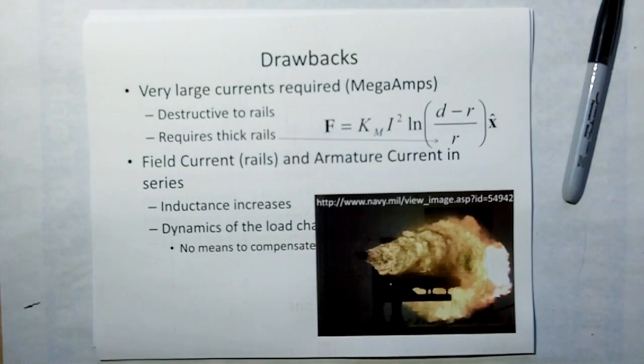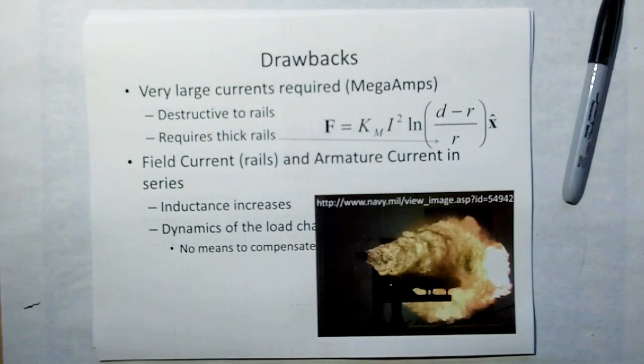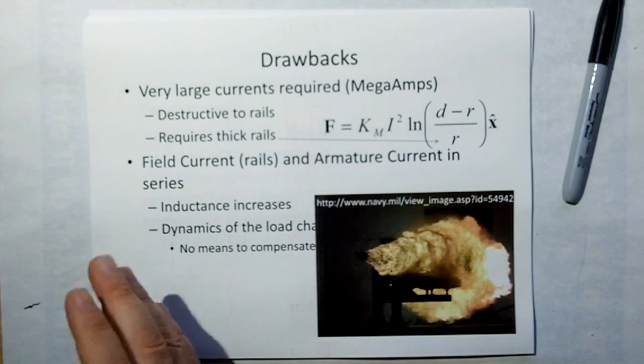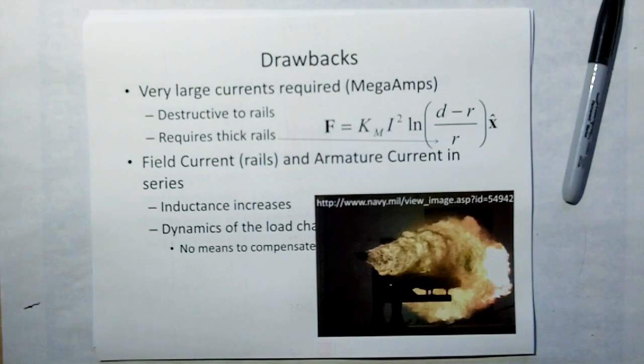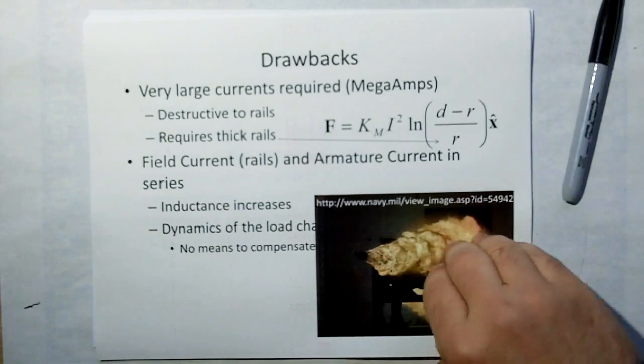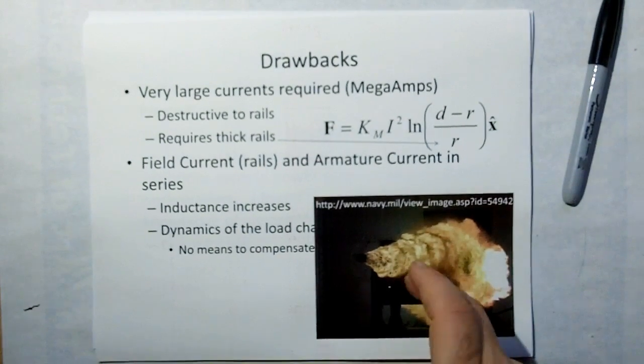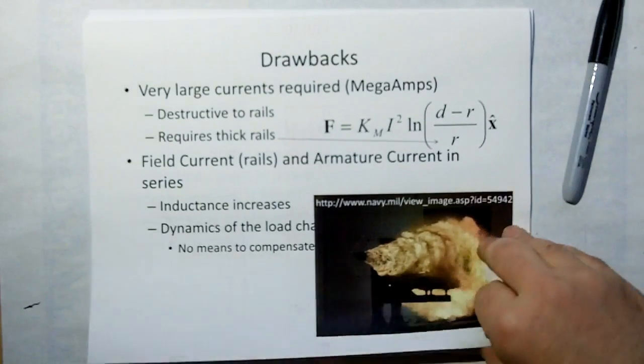And this is pretty much what I just covered. Very large currents required in the megaamps. It's very destructive to the rails. Requires thick rails. And one of the problems I see is they've got the rails and the projectile current, or the armature current, in series. And this increases the inductance and the dynamics of the load characteristics. And we'll cover that in more detail. This is a picture on Wikipedia. It's from the Navy test that they're doing.